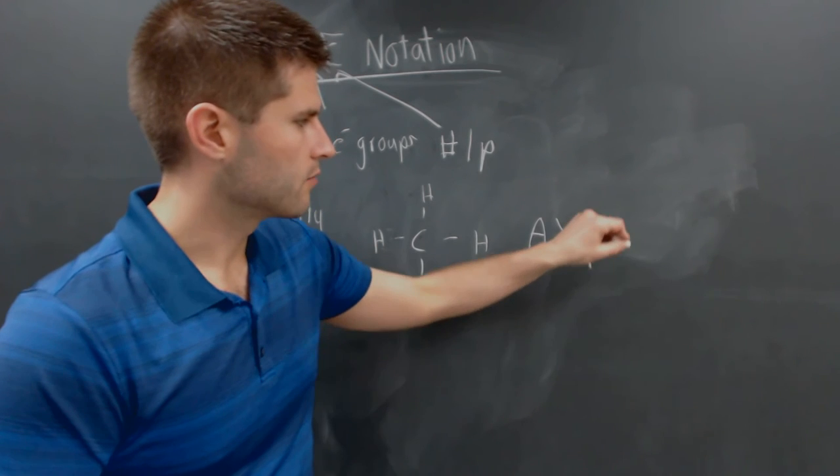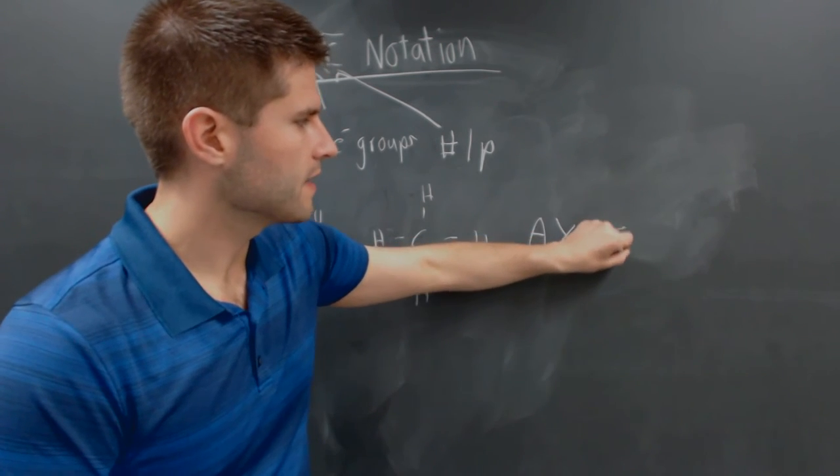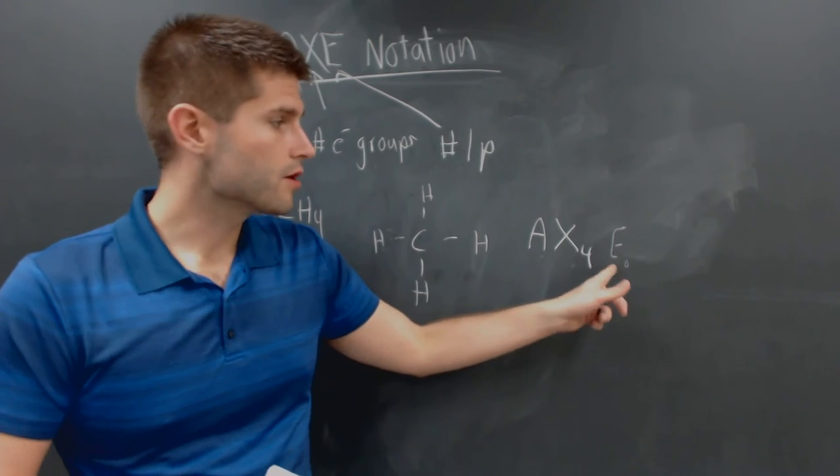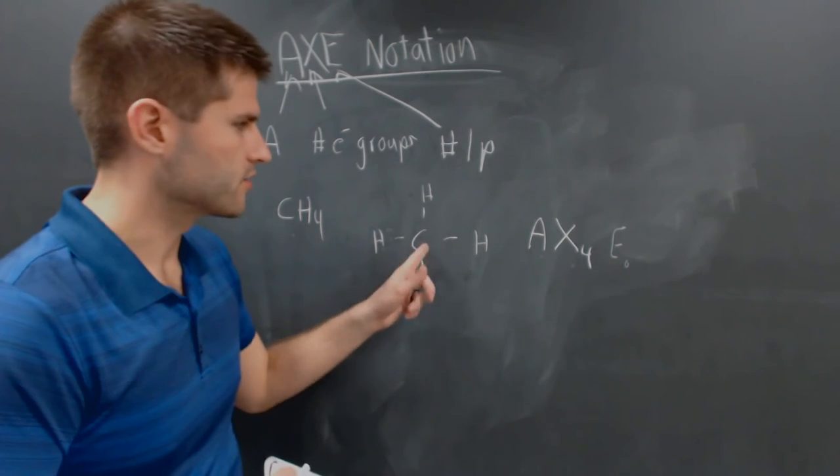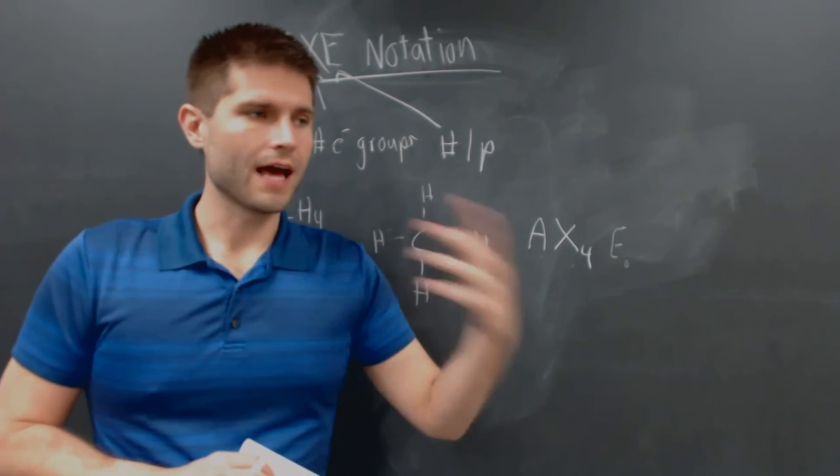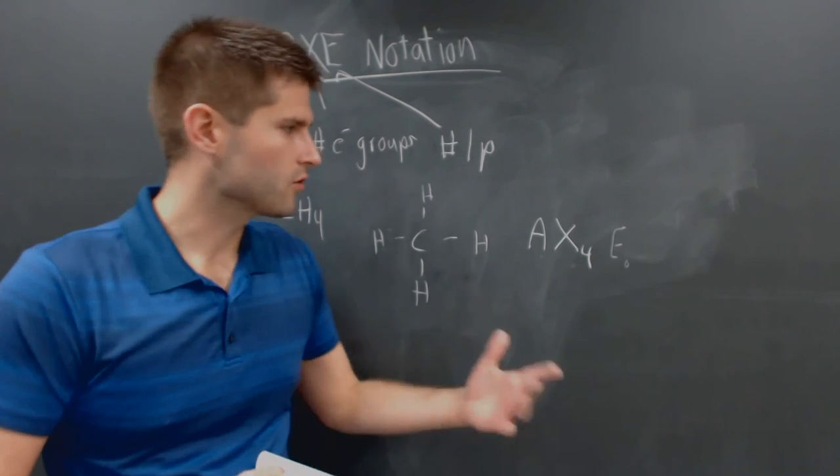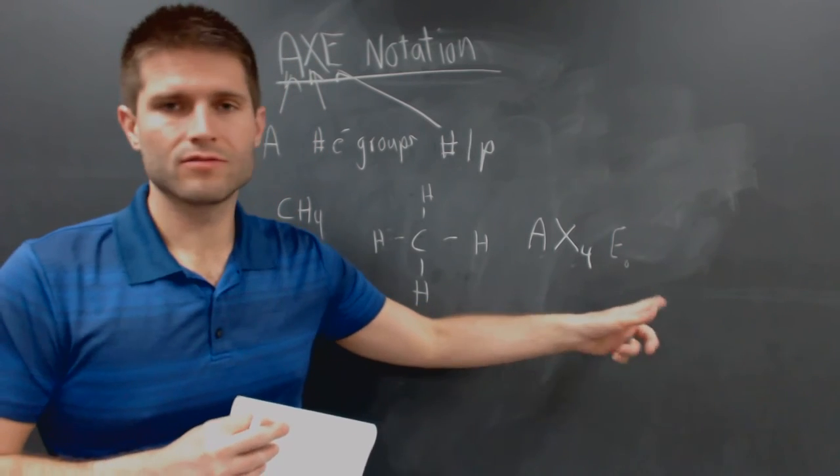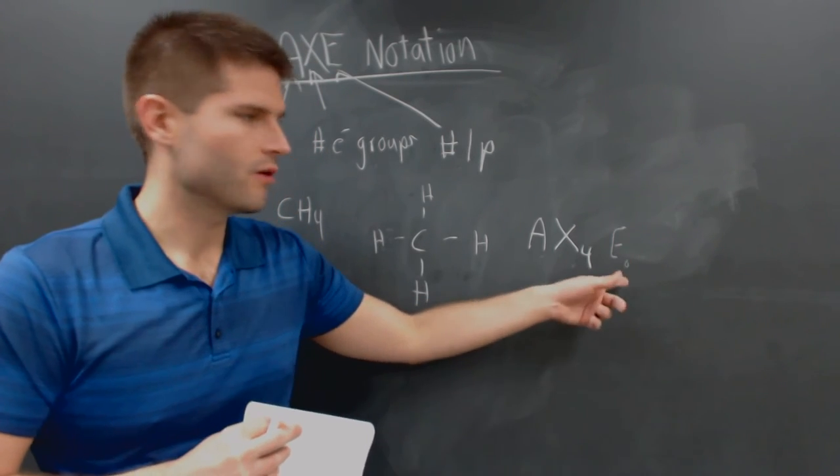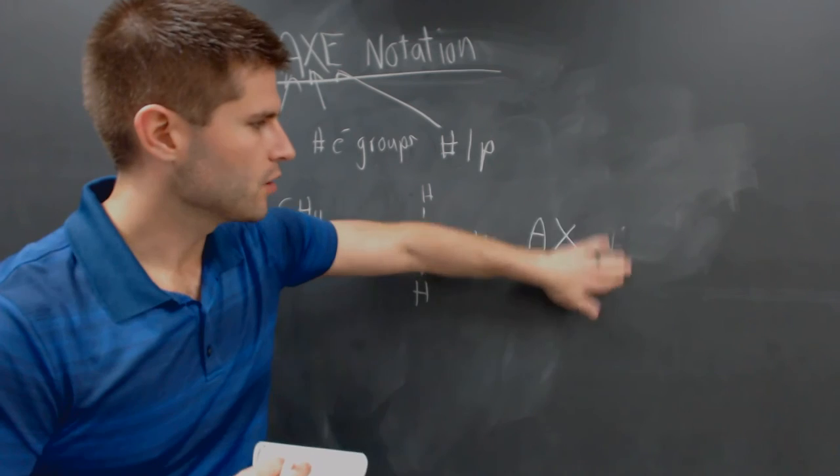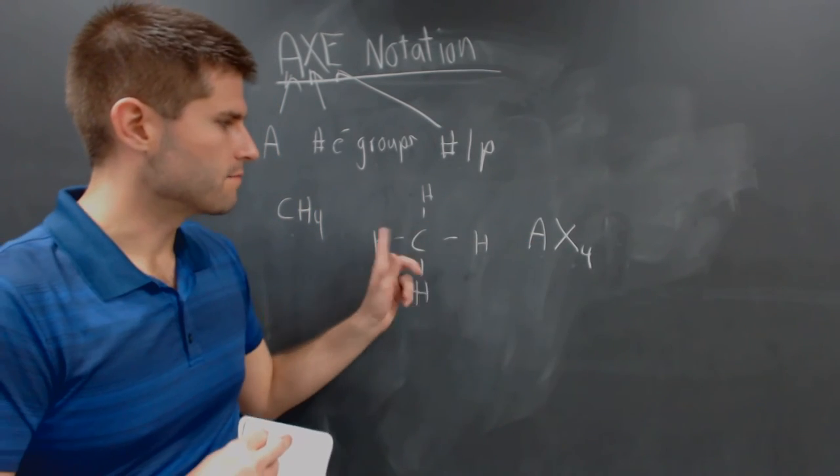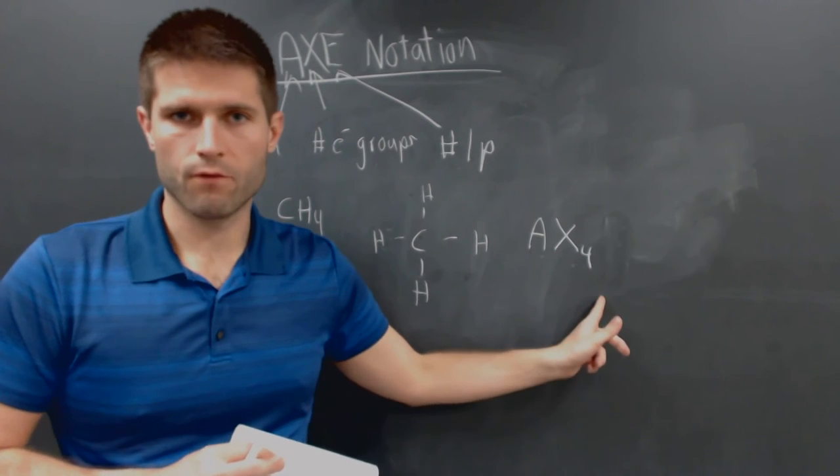And then we have an E, but I'm going to write it very lightly, because there are no lone pairs surrounding the central atom. So just like a lot of times in this chemistry course, I've told you, chemists really don't like to write things that are extra. Well, this E sub zero doesn't need to be there, because we don't have any lone pairs. So we don't write that. So the AXE notation for methane is just going to be AX4.